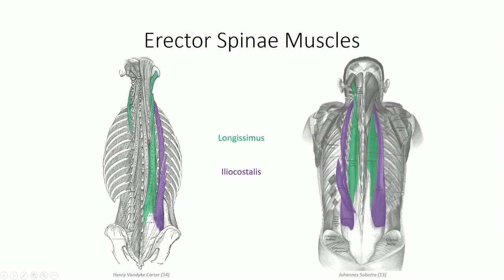Longissimus is the intermediate of these three muscles. It gets its name from being the longest muscle in the body, although with discontinuous muscle fibers. The thoracis division inserts on the ribs and thoracic transverse processes. The cervical division attaches to the cervical transverse processes, and a capitis division attaches to the mastoid process of the skull. Spinalis is the medial most of the three muscles; it both originates and inserts on spinous vertebral processes, with the uppermost capitis fibers attaching to the base of the skull.